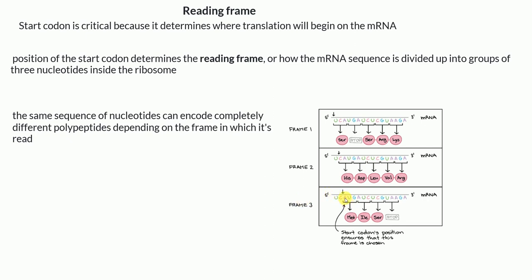In frame three, reading from the third nucleotide, we get AUG — which is the start codon, coding for methionine. This is why frame three is the correct reading frame: it contains the start codon AUG. After methionine, we have AUC coding for isoleucine, UCG coding for serine, and UAA which is a stop codon. This reading frame is the one that gets translated into amino acids to form the protein.